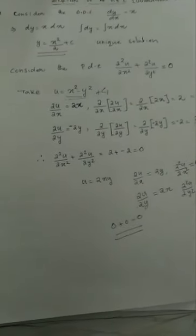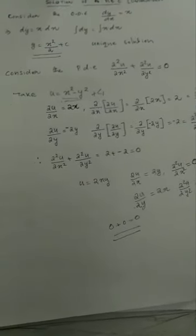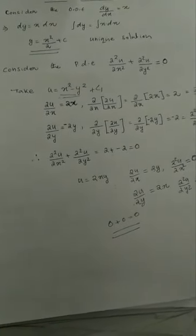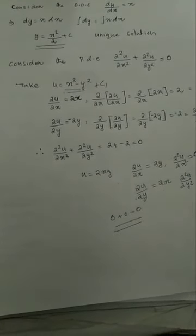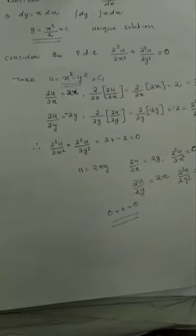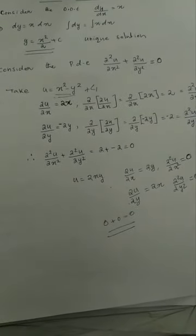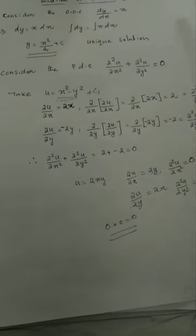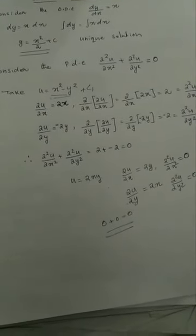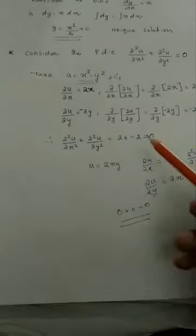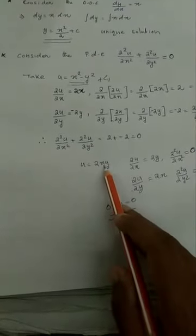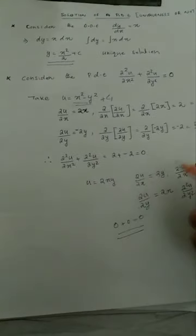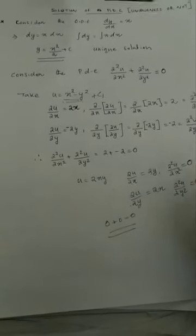Therefore, uniqueness is not present for partial differential equations, unlike ordinary differential equations. The uniqueness of solution depends on boundary conditions, which we will discuss in another session. So if asked whether the solution of a PDE is unique, you can use this example: both u = x² − y² and u = 2xy are solutions. The solution of a PDE is never unique. Thank you very much.